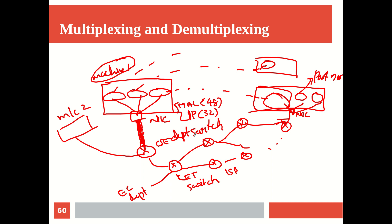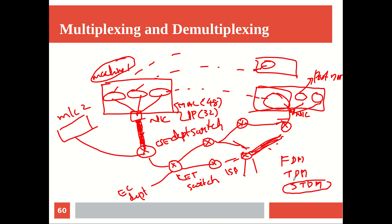For identifying a particular process that wants to communicate — at both sender and receiver sides — we have something called a port number. The port number or port address identifies a process within a machine. Multiplexing happens at the sender side and demultiplexing at the receiver side. And not only at the machine level — at the backbone network too, information from many devices is multiplexed through the backbone and demultiplexed at the receiver side. We have techniques like frequency division multiplexing, time division multiplexing — which you know from data communication classes.